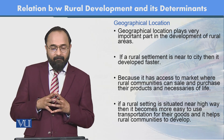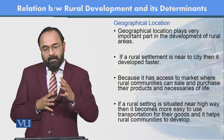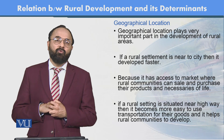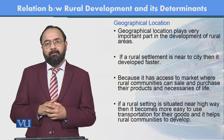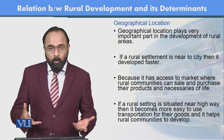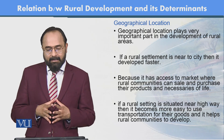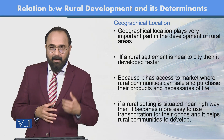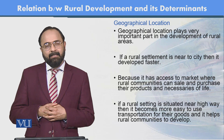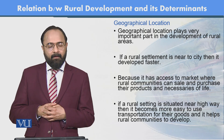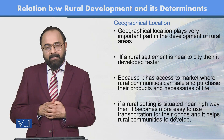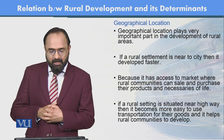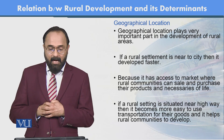Geographical location plays a very important part in the development of rural areas. If a rural settlement is near to the city, it develops faster. If a rural area is far from the city, the development process can be slowed down because access to market — where rural community can sell or purchase their products and necessities — is reduced. If a rural setting is situated near a highway, it becomes easier to use transportation for goods.